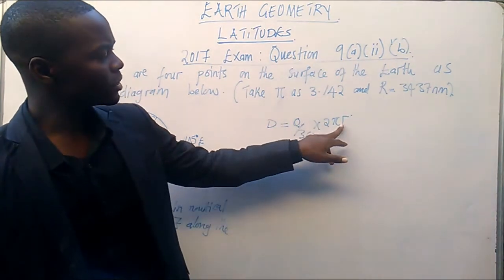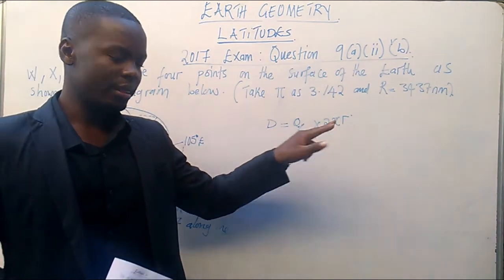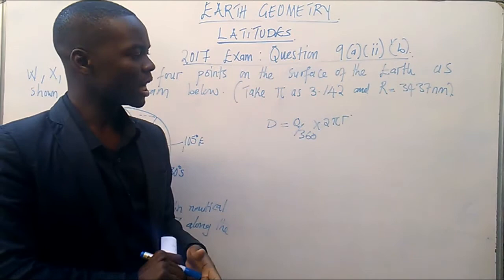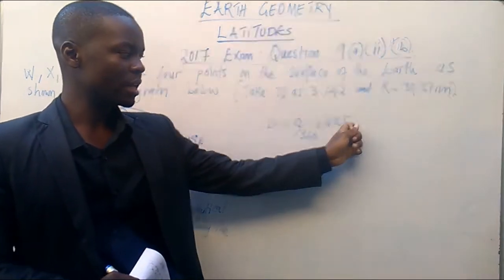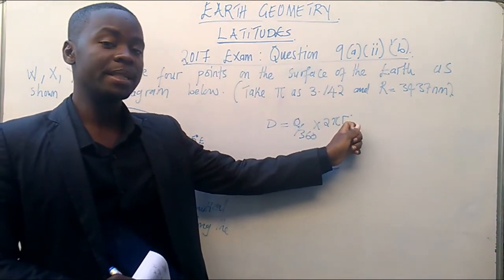Now, when you have got this small r, remember that under latitude, latitudes don't have a specific radius. They don't have a specific radius.